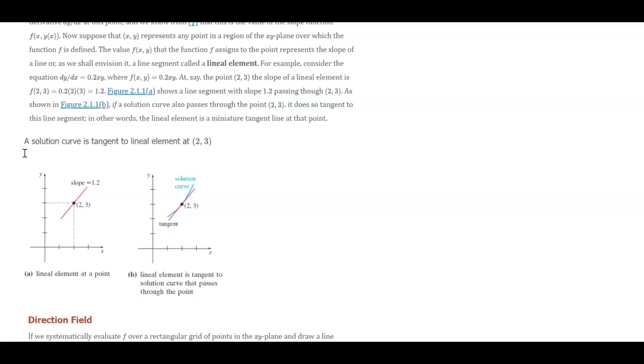2, 3, that my derivative is 1.2. And you can see up here in the work, when they plugged in the point x equals 2, y equals 3, they got a slope of 1.2. So you could draw in a line that has that slope right here.